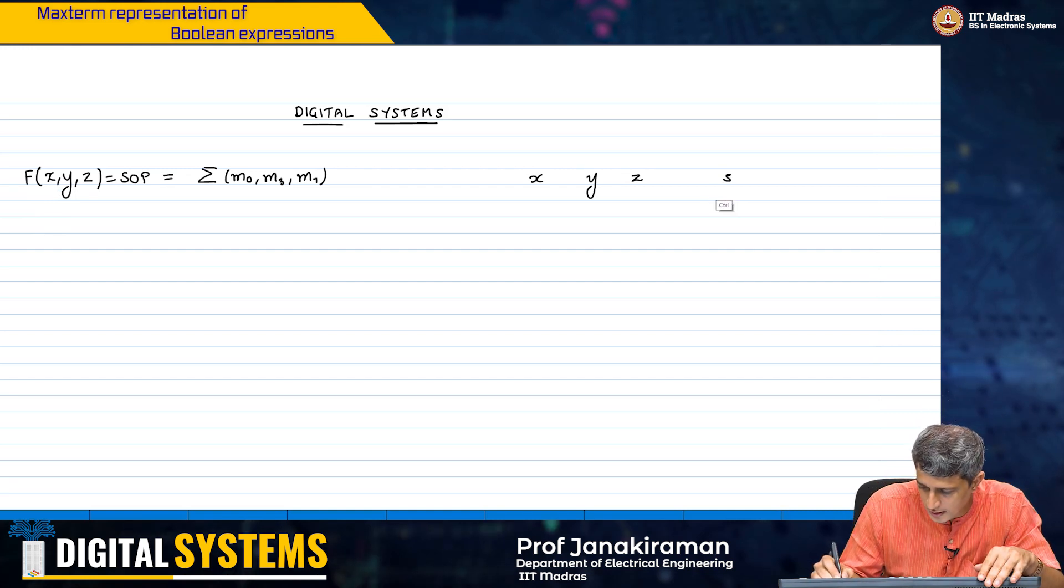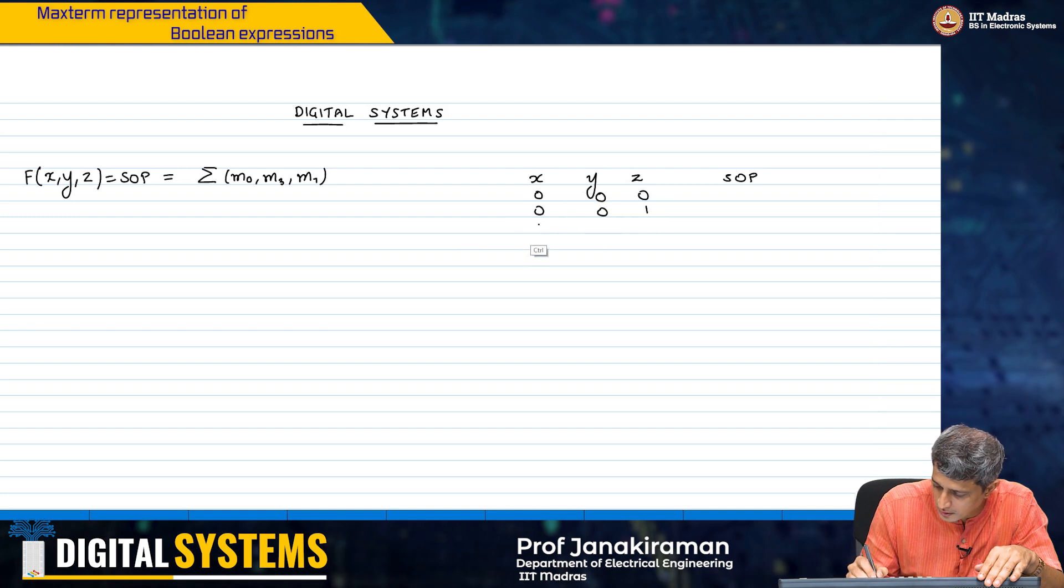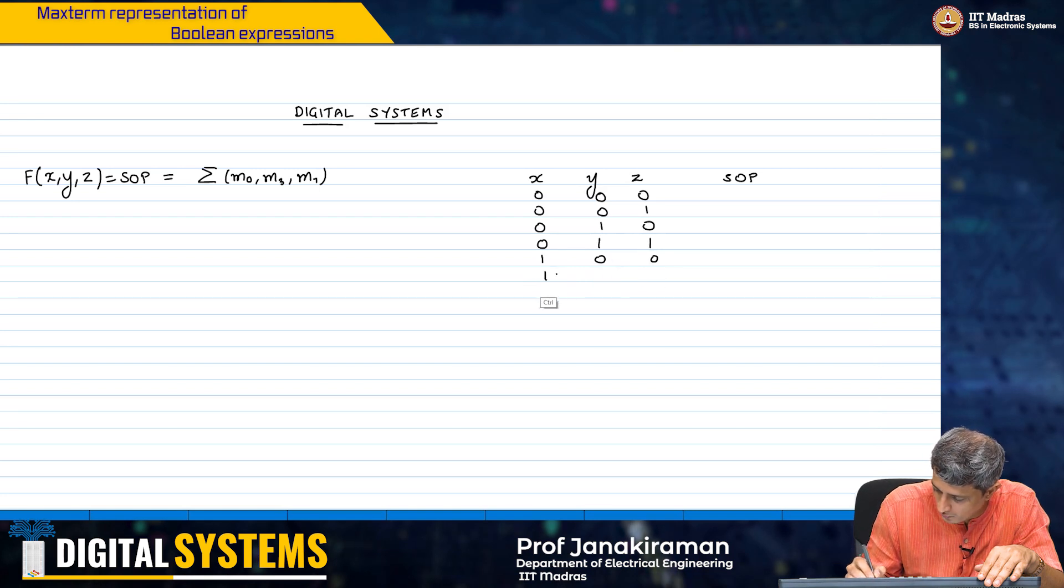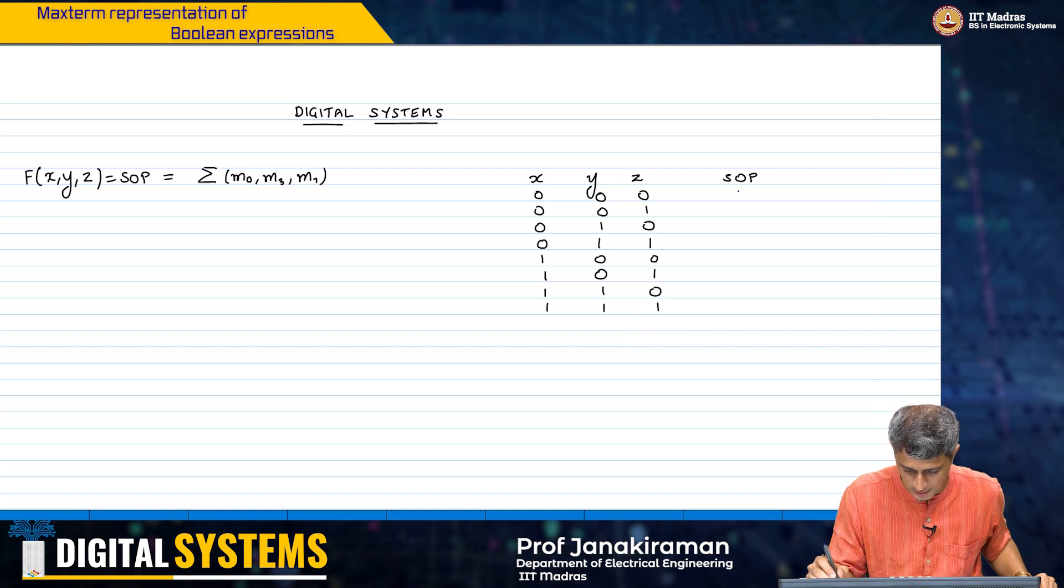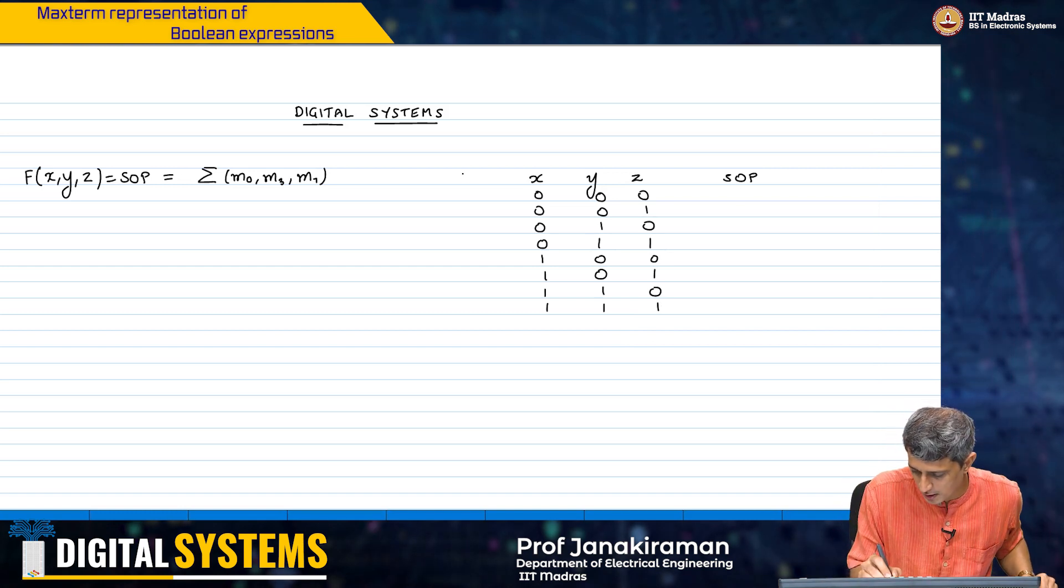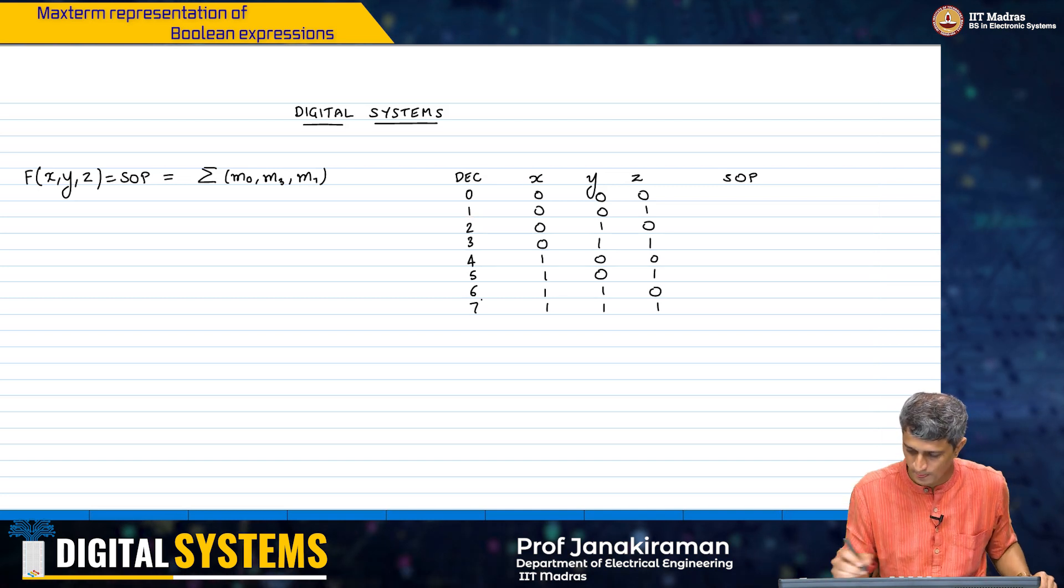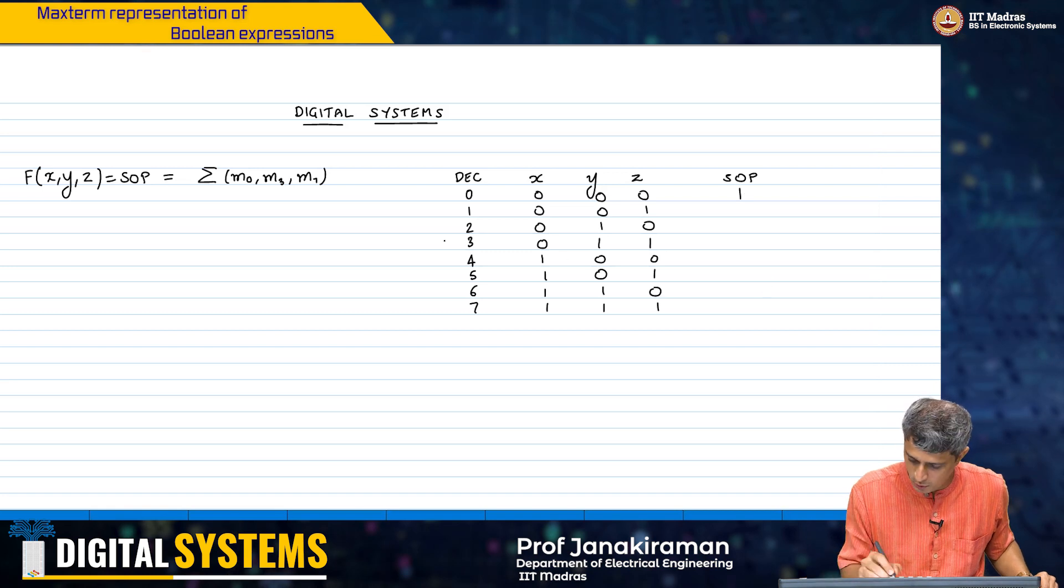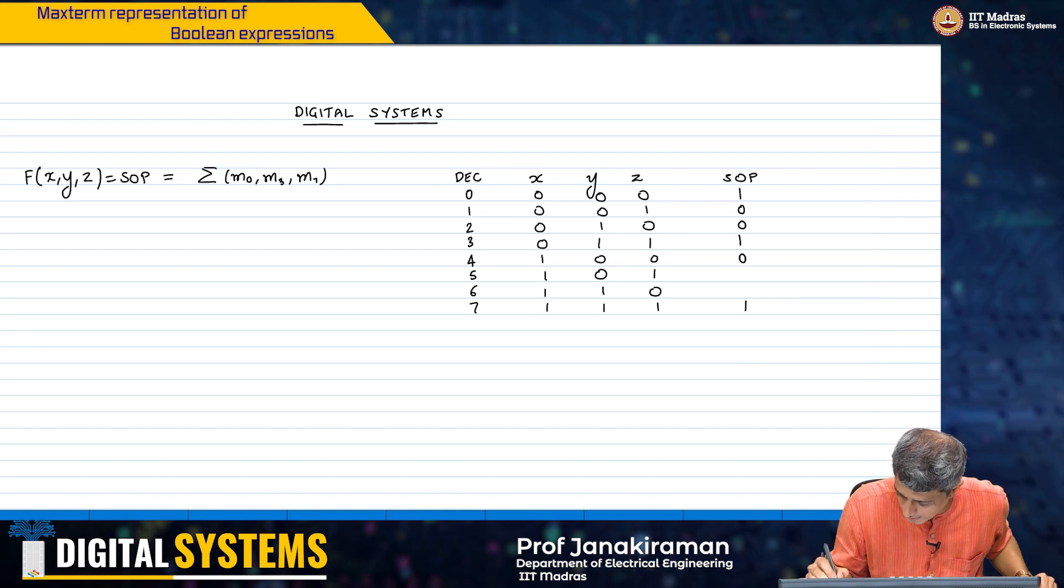If I look at the sum of product representation, we are basically saying 0, 0, 0, then 0, 1, 0, then 1, 0, 1, then 1, 1, 0, then 1, 1, 0, then 1, 1, 1. And we have said that the sum of product is term and this is the decimal equivalent, decimal number 0, 1, 2, 3, 4, 5, 6, 7. So you have the 1, then you have at 3 and then you have at 7. The remaining locations we are saying is basically 0.